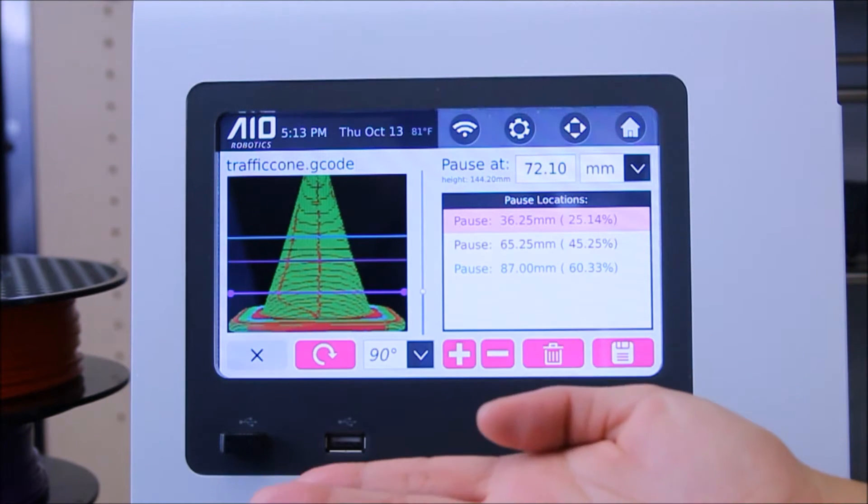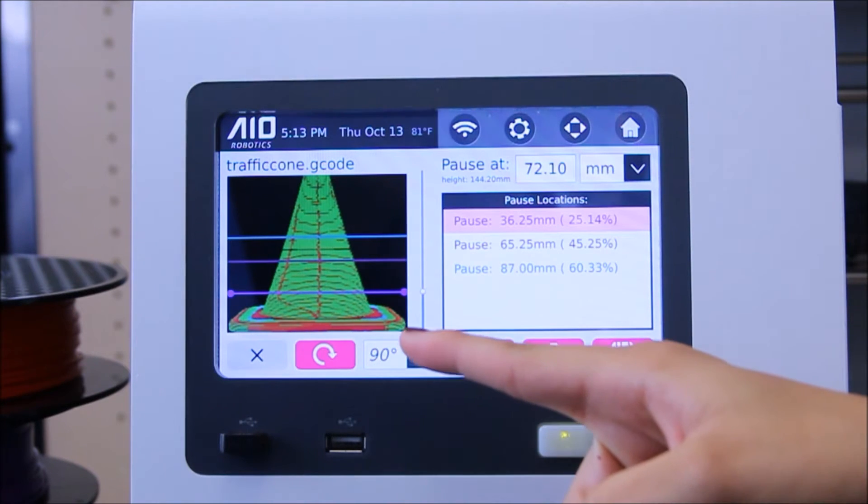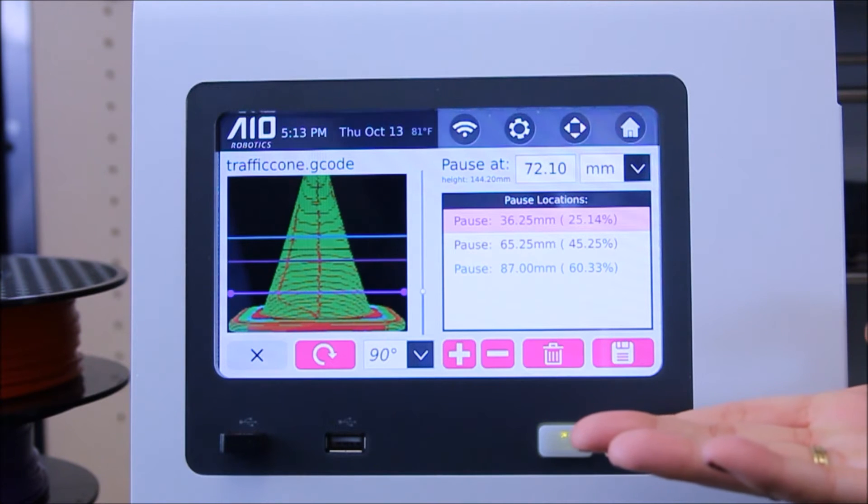The left side of the page shows the image of your object with each horizontal line depicting the pause points that you will determine. The right side of the page displays the pause points you have already set.